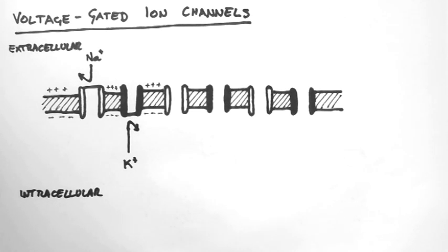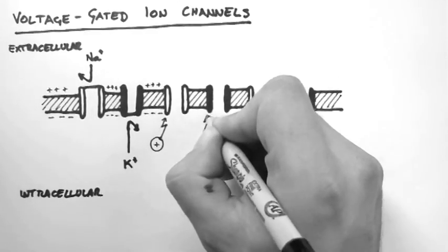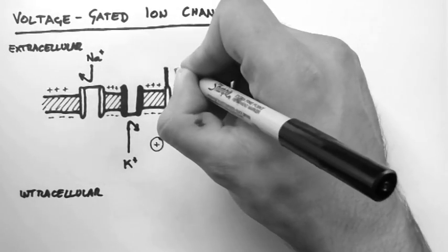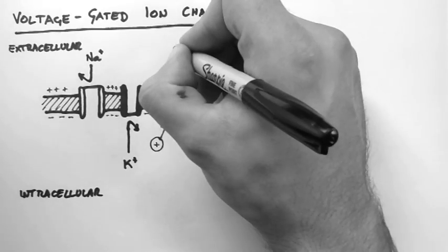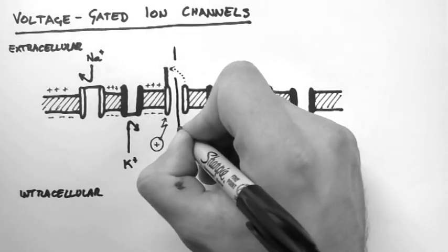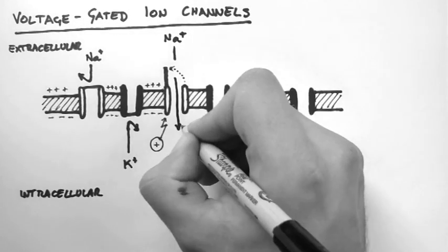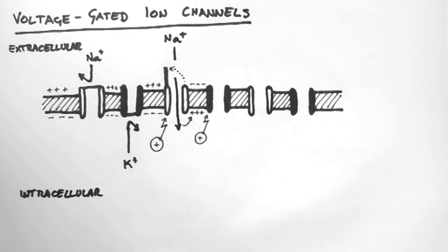However, if we change the voltage across the membrane by adding positive charges here and here, then this gate flips open on the sodium channel. This allows sodium to flow into the cell down its concentration gradient. This means there is an influx of positively charged sodium ions, and the positive charges start lining up across the membrane with the negative charges lining up on the other side. So this is a reversal of the resting membrane potential.